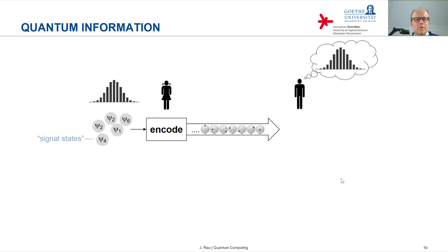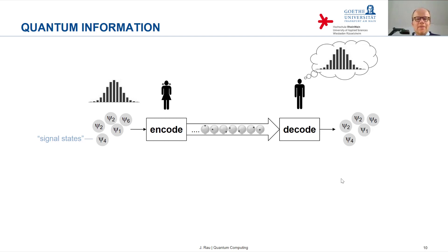What Bob does not know is the specific sequence of signal states produced on Alice's side. He receives the qubits, decodes the qubits — we have yet to define what the code means — and then reconstructs the quantum signal states.